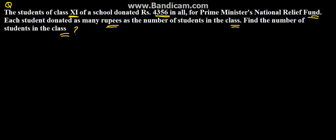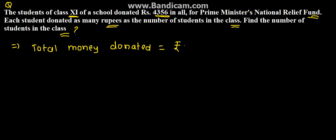The condition given is: each student donated as many rupees as the number of students. That means total money donated equals rupees 4356. So total money donated is four thousand three hundred and fifty six.